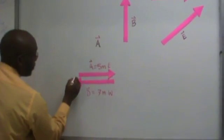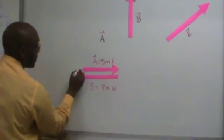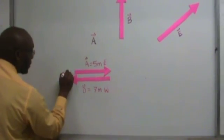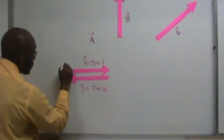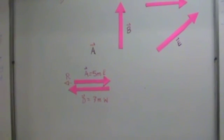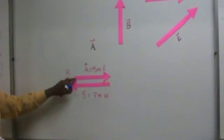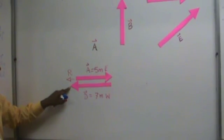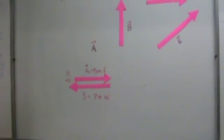The resultant is going to be this little piece right here. That's the resultant. It goes from the tail of the first vector to the head of the second vector.